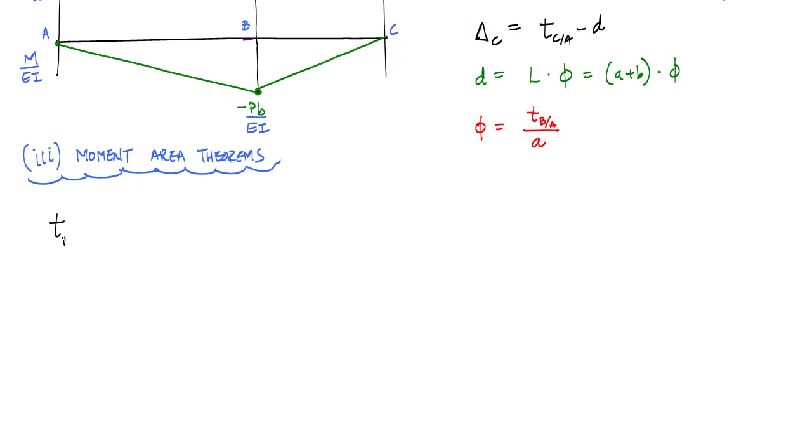Which says that TBA is equal to this first moment of area of the integral, or this AB M over EI times DX. And this integral, this AB part right here, this from A to B, this integral represents the area from A to B of the curvature diagram. And this X bar represents the distance from the centroid of this area, which I will put in red, to point B.